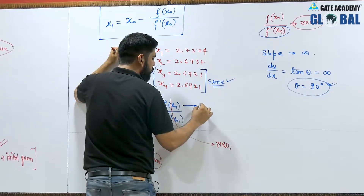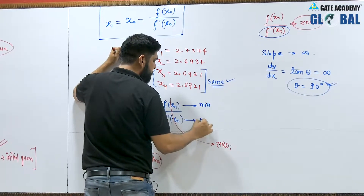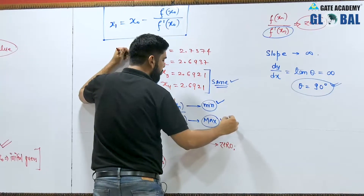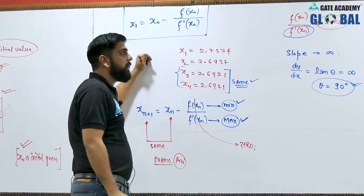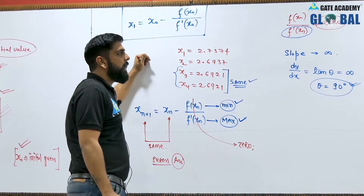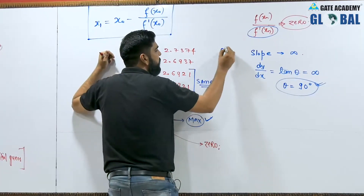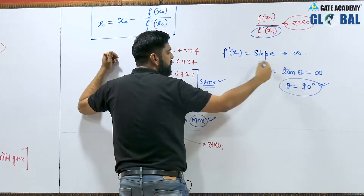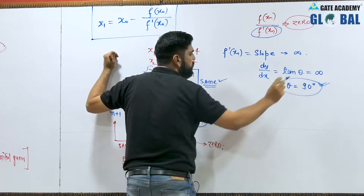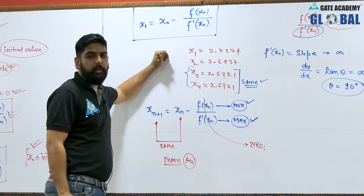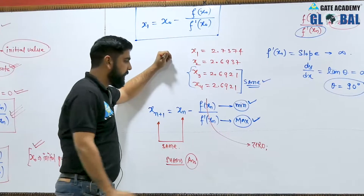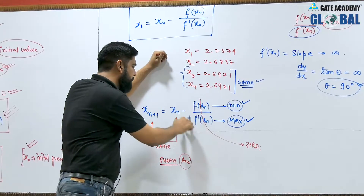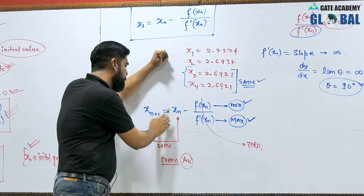In the ideal case, the numerator should be minimum and the denominator should be maximum. If f(x_n) / f'(x_n) = 0, then f'(x_n) — the slope — tends to infinity, meaning tan(θ) → ∞, so θ = 90°. When θ = 90° and the slope is infinity, this value becomes zero and we get our answer exactly.